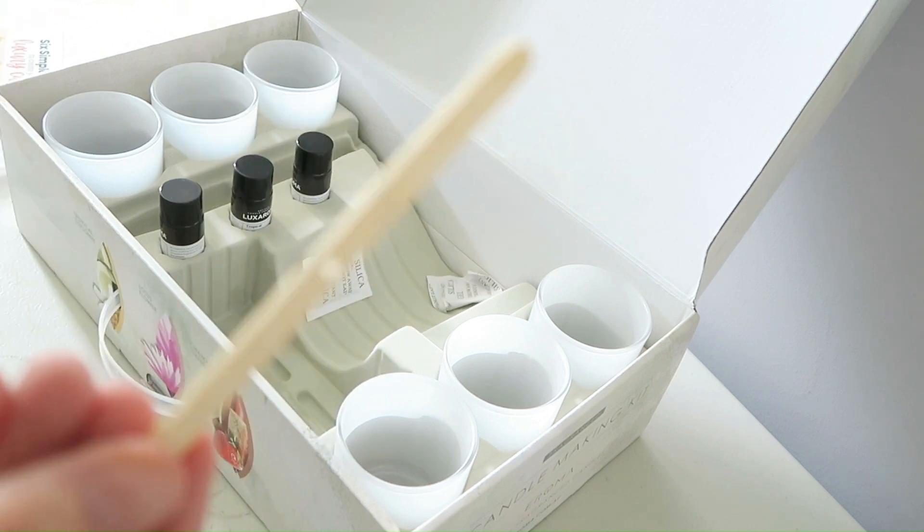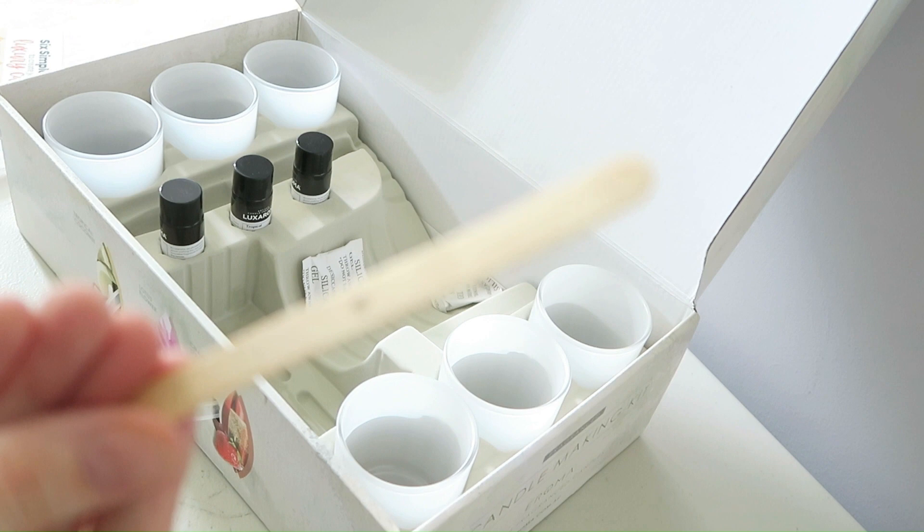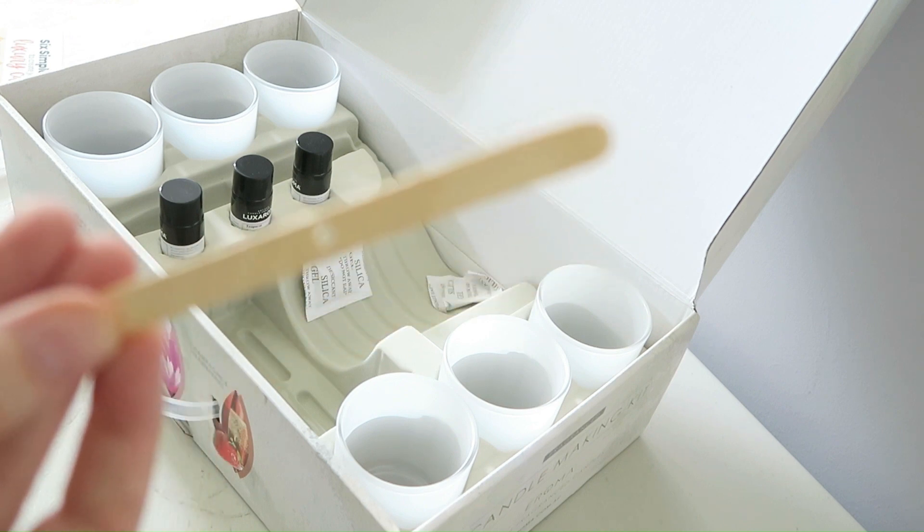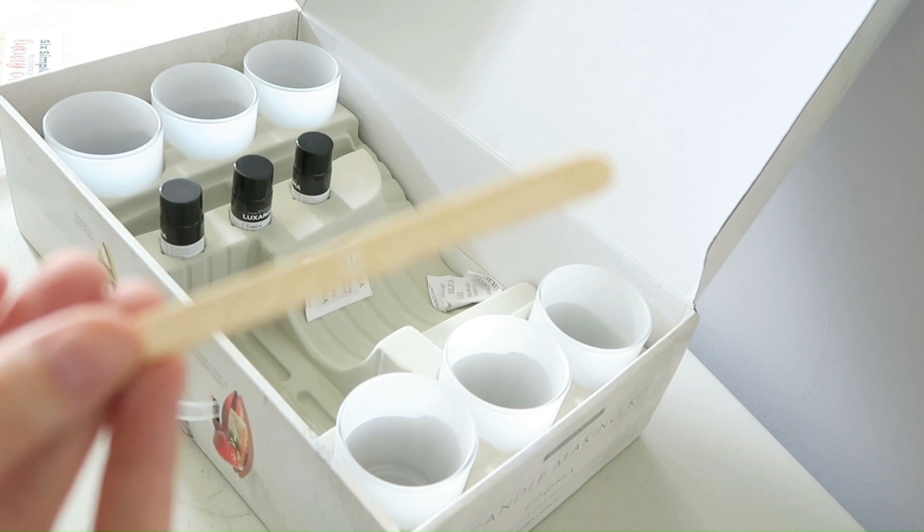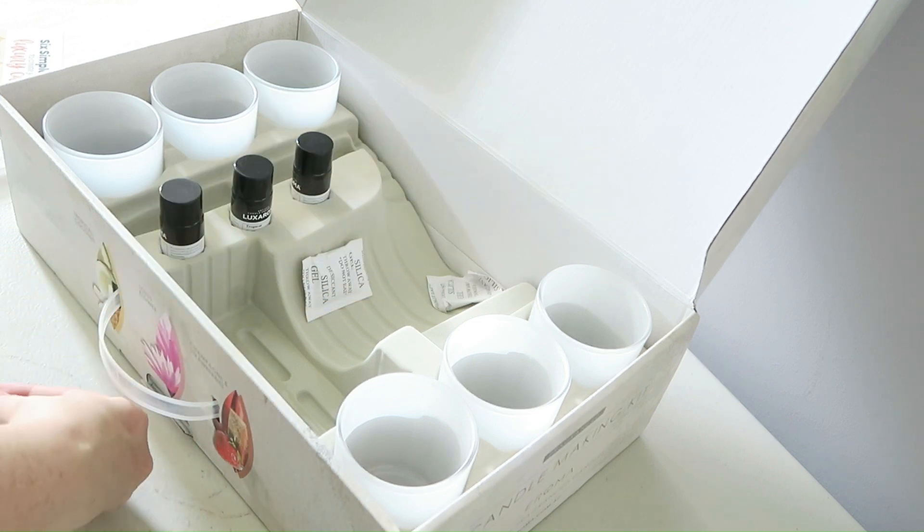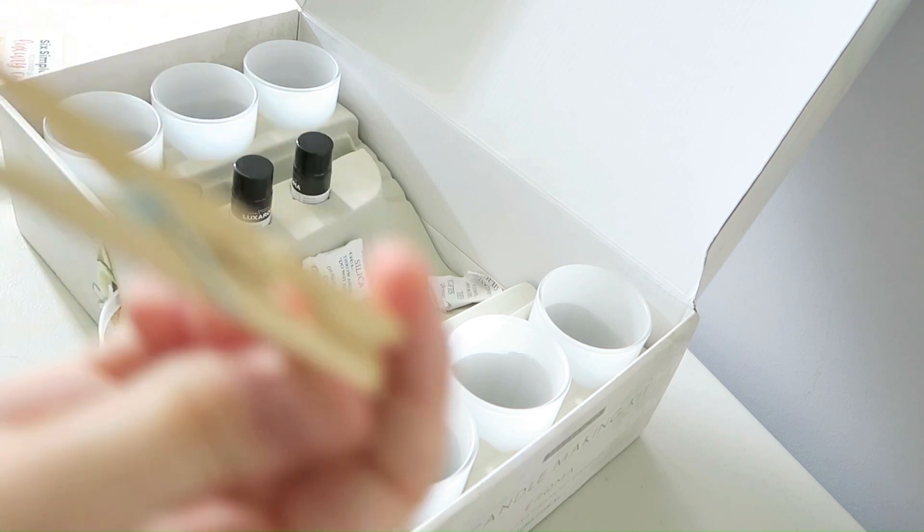They look like a paddle pop stick with a hole drilled in the middle. It also came with two pegs to secure your wick holders and your wick in place.